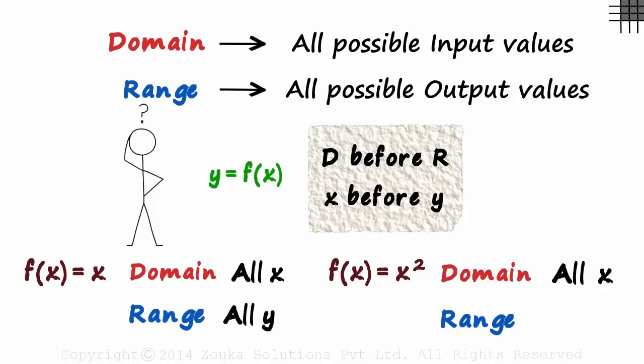The range is interesting. Will it be all y? It will be all y greater than or equal to zero. Why? Because the square of any number cannot be negative. It will always be non-negative.